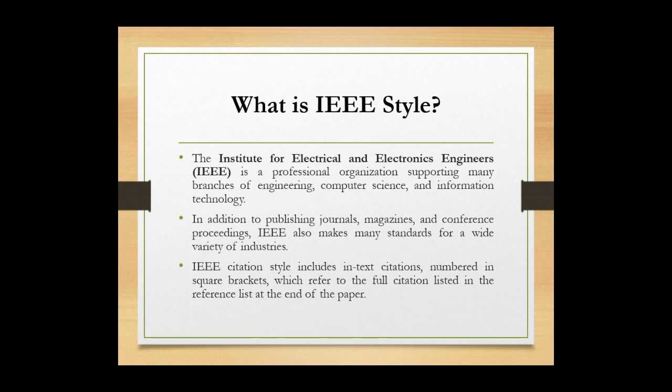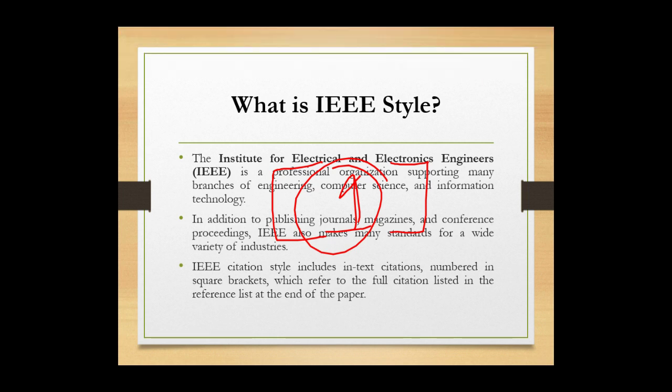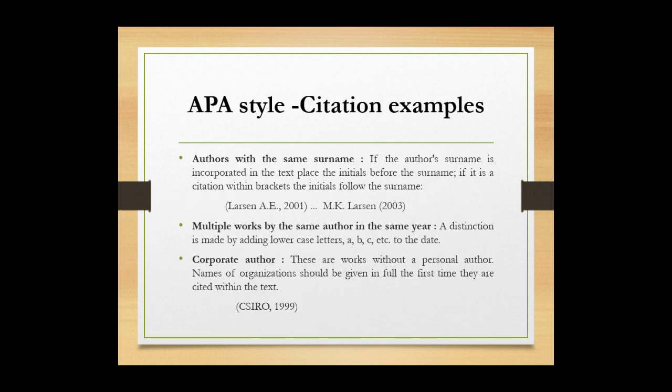IEEE style stands for the Institute of Electrical and Electronics Engineers. It is a professional organization supporting many branches of engineering, computer science, and information technology. So if you are doing studies in engineering, computer science, or information technology, you use IEEE style. When doing an in-text citation in IEEE style, you use numbered square brackets. The number inside the brackets represents the source in the reference list, and the full details of whatever you have cited will appear in the reference list.